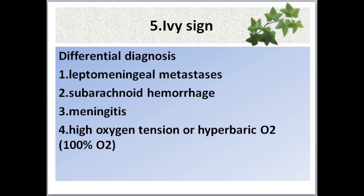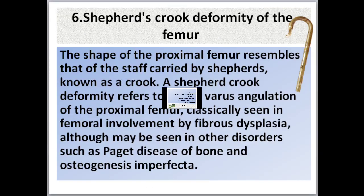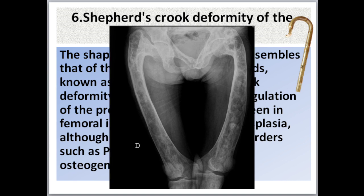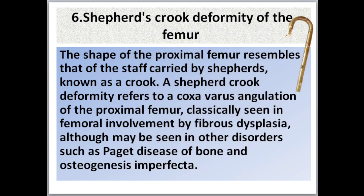Differential diagnosis of the ivy sign: one, leptomeningeal metastasis; two, subarachnoid hemorrhage; three, meningitis; four, high oxygen tension or hyperbaric oxygen. Number six: shepherd's crook deformity of the femur. The shape of the proximal femur resembles the staff carried by a shepherd, known as a crook. It refers to a coxa vara angulation of the proximal femur, classically seen in femoral involvement by fibrous dysplasia, although it may also be seen in Paget's disease of bone and osteogenesis imperfecta.